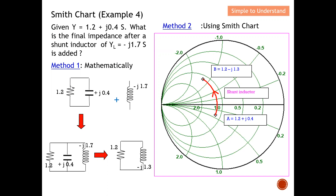To summarize the distinction from Part 3: Part 3 used impedance charts because series elements were being added. For this case, I use admittance because the element added is a shunt element — in this case, a shunt inductor. You can see how this is solved on the Smith Chart.